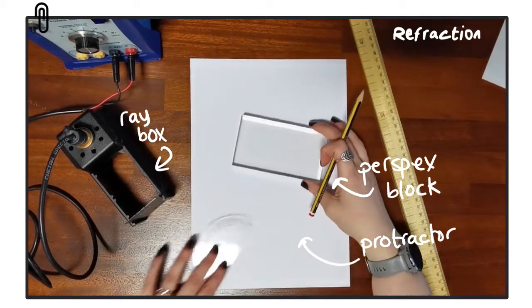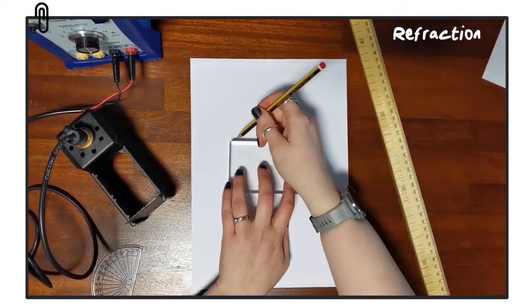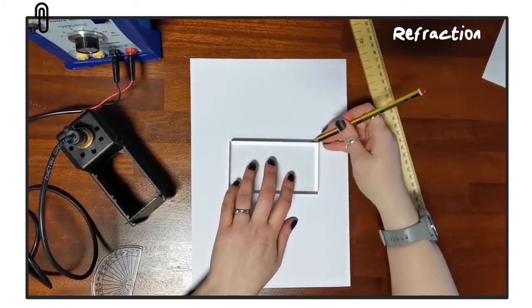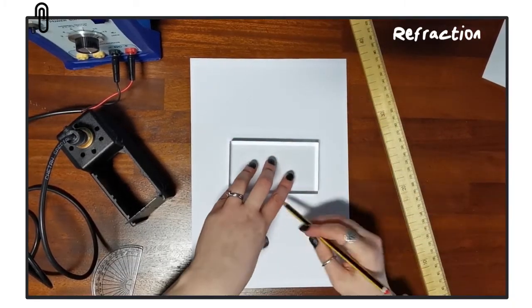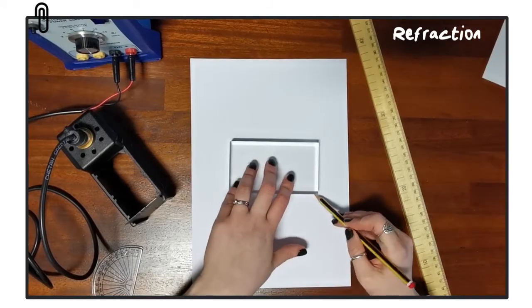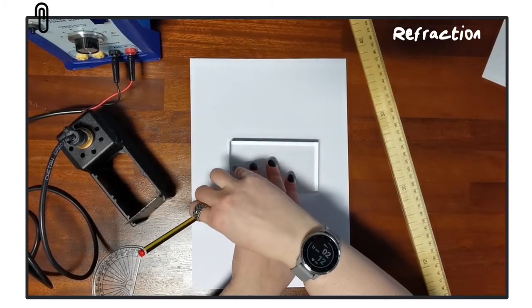So the first thing we're going to do is take the block, put it in the center of the page, and trace around it with a pencil. This is important because throughout this experiment we are going to need to remove this block so that we can draw on the path of any light rays.